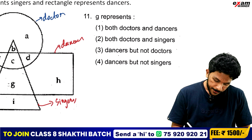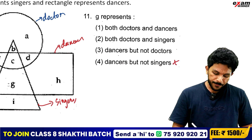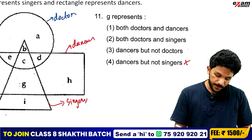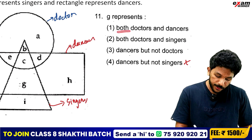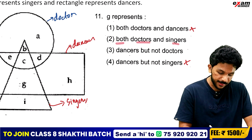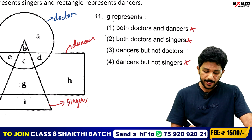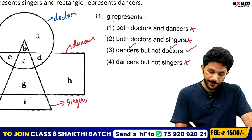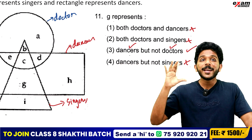What is the dancers but not singers? Dancer and singer are both doctors. This is the dancers but not doctors. What is the correct answer? Both doctors and dancers? No. Both doctors and singers? No. Dancers but not doctors — that's right. Dancer is not a doctor. This is the correct answer — dancer is not a singer.